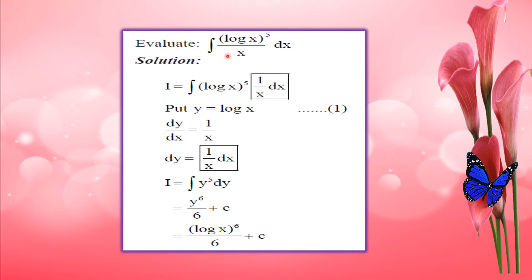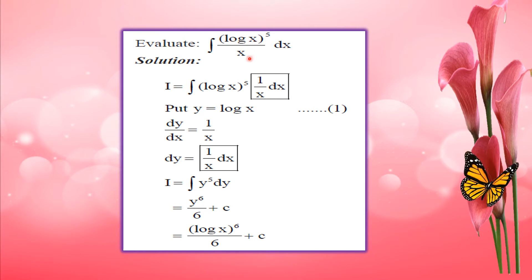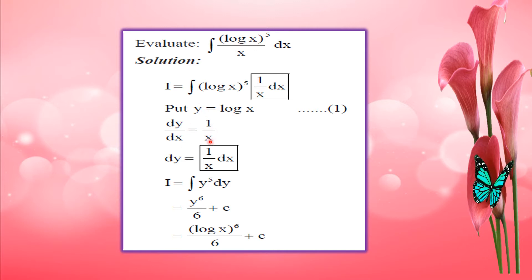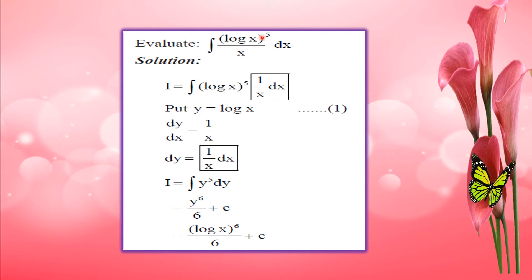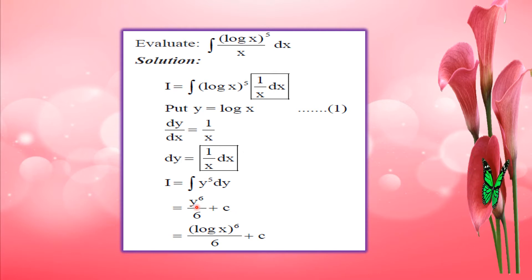The next question is the integral of log x raised to 5 divided by x. We use the derivative of log x, which is 1 by x. Substitute y equal to log x, so dy by dx equals 1 by x, meaning dy equals dx by x. The integral becomes y raised to 5 dy, which equals y raised to 6 by 6 plus c. Substituting back gives log x raised to 6 by 6 plus c.